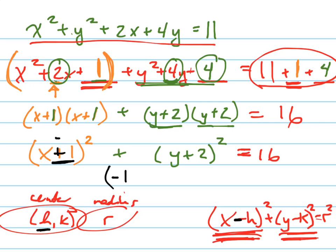Because positive 1 is like minus a negative 1. Right? Uh-huh. So you're taking the opposite of what's inside there. And what's the Y coordinate of the center? Negative 2. Negative 2.